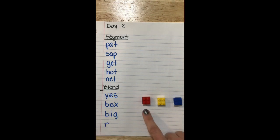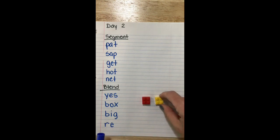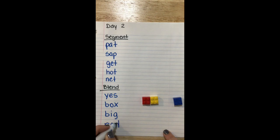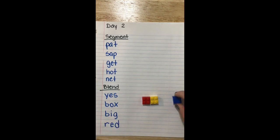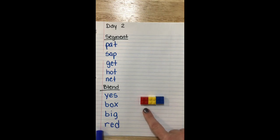Last one, sound, R. Sound, E, blend, R-E. Sound, D, blend, RED. Word, RED.